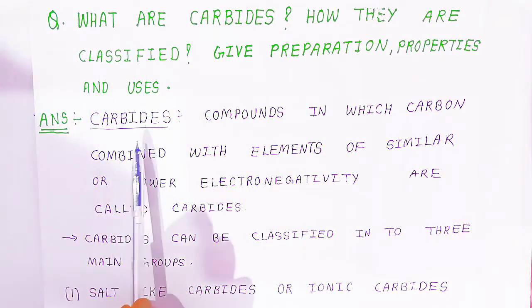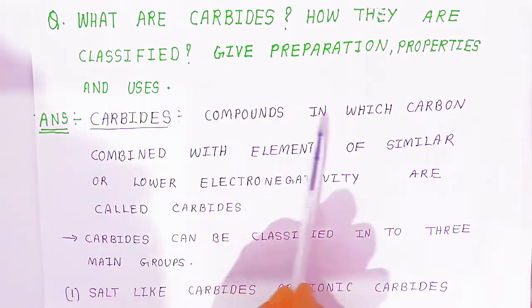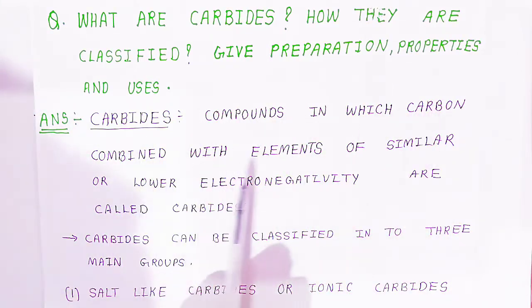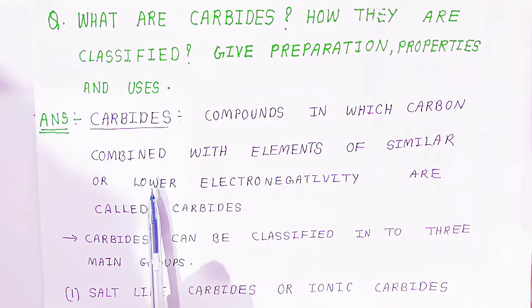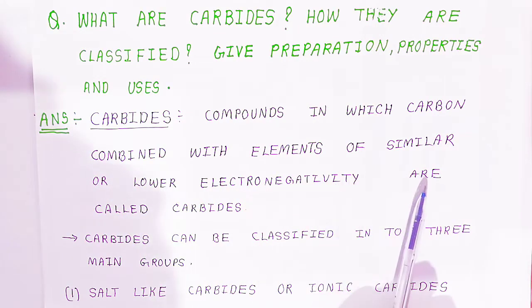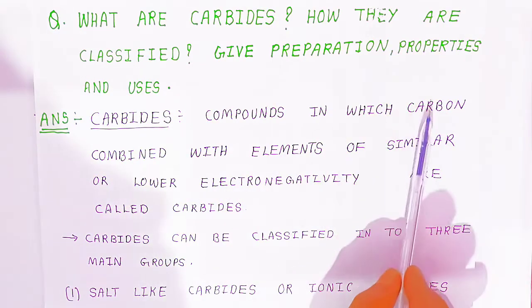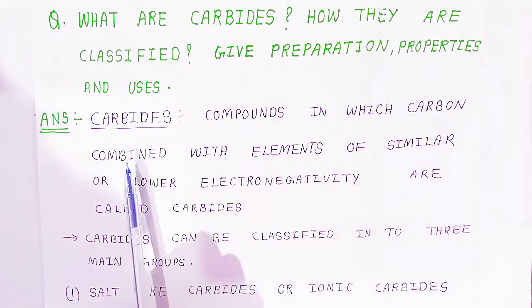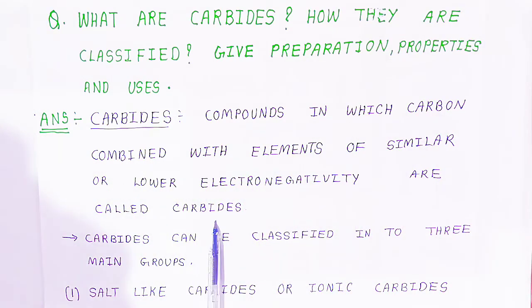First you have to give the definition of carbides. Carbides are compounds in which carbon combines with elements of similar or lower electronegativity. The carbon is combining with elements of similar or lower electronegativity — these are called carbides.